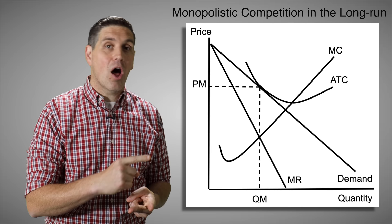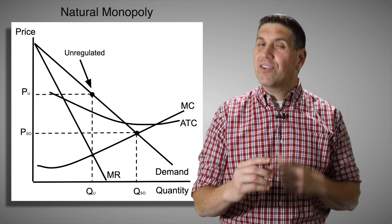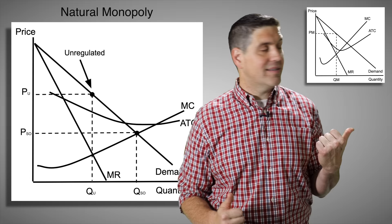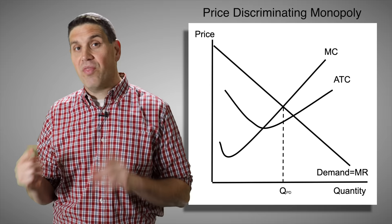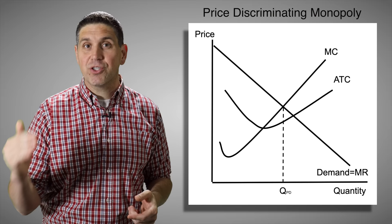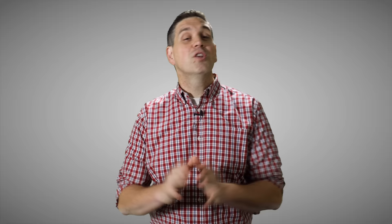For unit four, drawing a monopoly and drawing monopolistic competition in the long run are the key graphs you have to know — you'll definitely see them on a free response. A natural monopoly looks similar to a regular monopoly, but where the marginal cost hits the demand curve at the socially optimal quantity, the average total cost is still falling. This means one firm can produce this product at the lowest possible cost. You should also know the price discriminating monopoly, where the monopoly charges each consumer exactly how much they're willing to pay, so the demand curve equals the marginal revenue curve and there's no consumer surplus — all of it becomes profit.